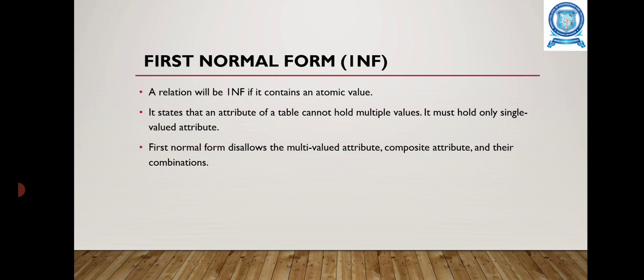A relation will be in 1st Normal Form if it contains an atomic value. That means an attribute of a table cannot hold multiple values — it must hold only a single-valued attribute. 1st Normal Form disallows the multi-valued attribute, composite attribute and their combinations.